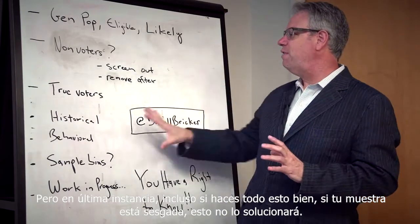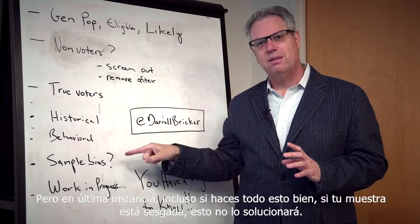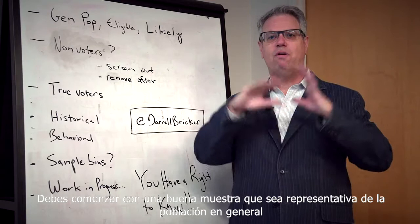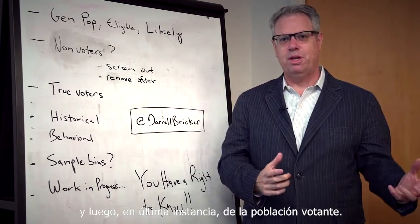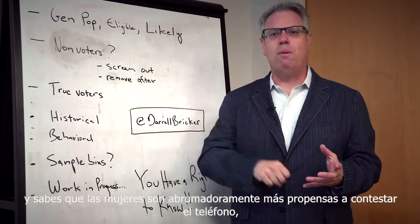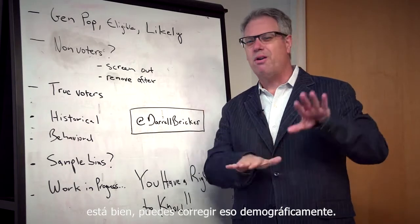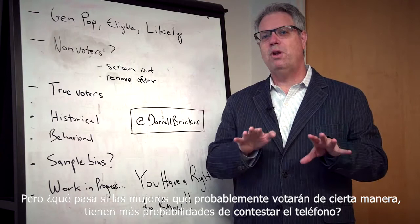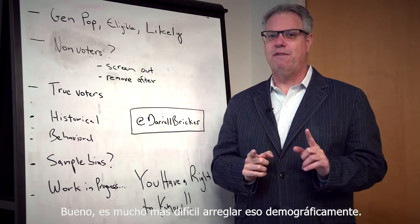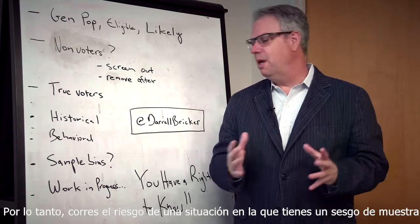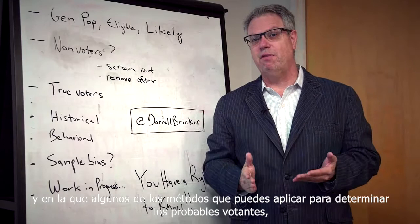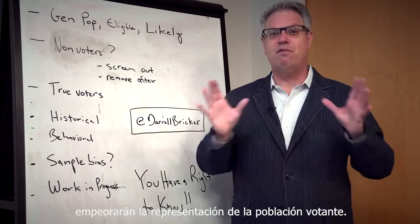Even if you do all of this right, if your sample is biased, it isn't going to fix it. You have to start off with a good sample that's representative of the overall population and ultimately of the voting population. For example, if you're doing IVR or robocall-type polls and women are overwhelmingly more likely to answer the phone, you can correct for that demographically — but what if it's specifically women who are likely to vote a certain way who are more likely to answer? That's a lot harder to fix demographically. You run the risk of a sample bias in which some of the methods you apply to determine likely voters will actually make the representation of the voting population worse.